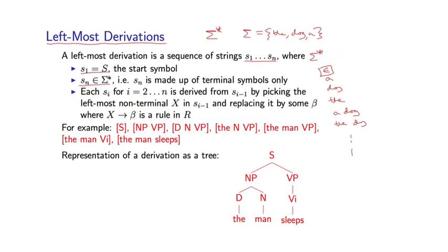Sn has to be a sentence, for example the man sleeps, only elements of sigma. And then each intermediate Si for i equals 2 to n is derived from Si minus 1 by picking the leftmost non-terminal X in Si minus 1 and replacing it by some beta where X goes to beta is a rule in R. Here's an example of a derivation, and I'll go over this in much more detail on the next slide.